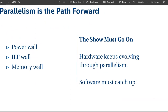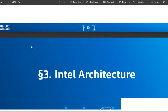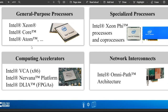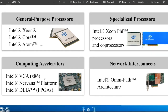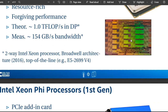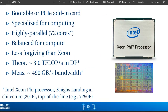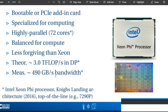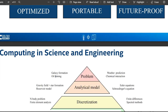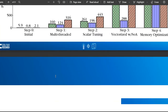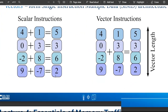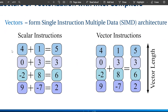Here's the Intel Xeon Phi 5 processor — discontinued in 2018, but it's still a fantastic processor. It's capable of 3 teraflops per second and there's 490 gigabytes per second bandwidth. These are the scalar instructions and these are the vector instructions — single instruction multiple data (SIMD).